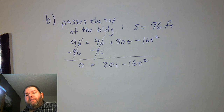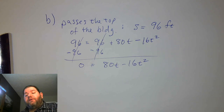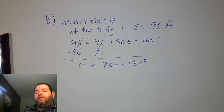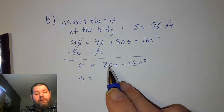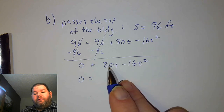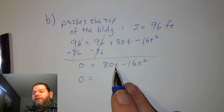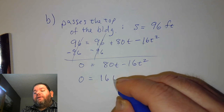Since it's not a trinomial — we no longer have a constant — we don't need two binomials. Instead it's an easier factoring problem: we can just take out the common factor from both parts. We already established that 16 is the common number, and both terms have a t. So let's factor out 16t.